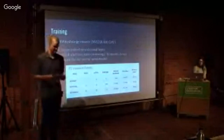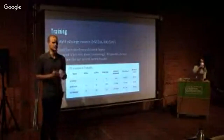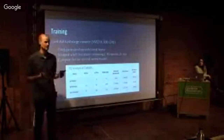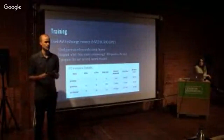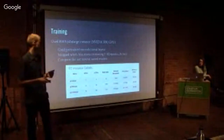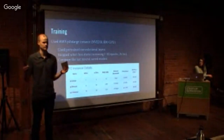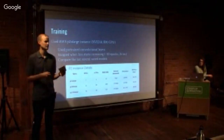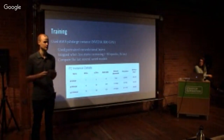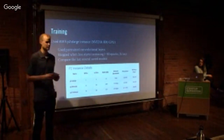For training we used AWS P2 instances — specifically one P2XLarge instance, which has an NVIDIA K80 GPU, which was more than enough. We started with pre-trained convolutional layers for the network and then trained on our own data. With 50 epochs, that took about 14 hours of training time.